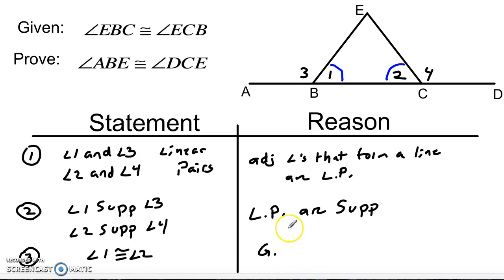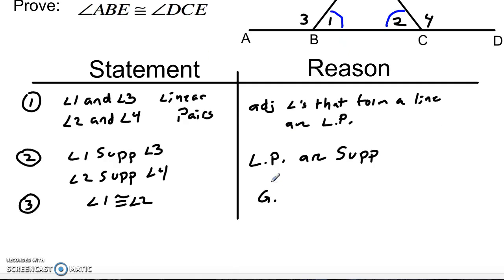And this is where that theorem that supplements of congruent angles are congruent comes into play. I'm going to scroll down a little bit here just so we can see a little bit better. If you take a look at what I've got so far, I have angle one and two congruent. So this guy is congruent to this guy.